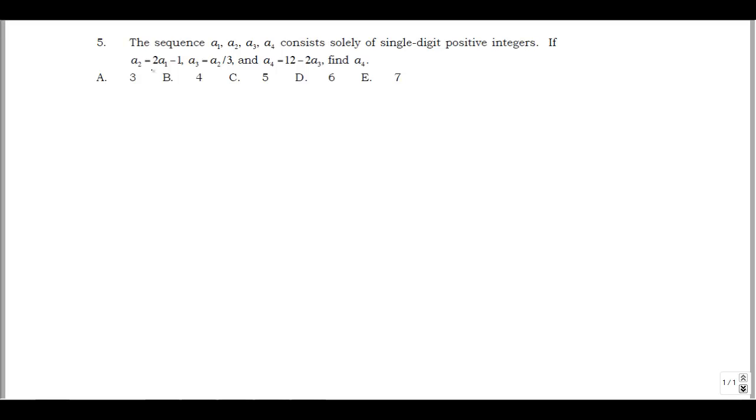So this is question 5 of the Spring 2015 AMATIC Student Math League contest. The question is, sequence A1, A2, A3, A4, consists solely of single-digit positive integers, that is, they're 1, or 2, or 3, or 4, up to 9.